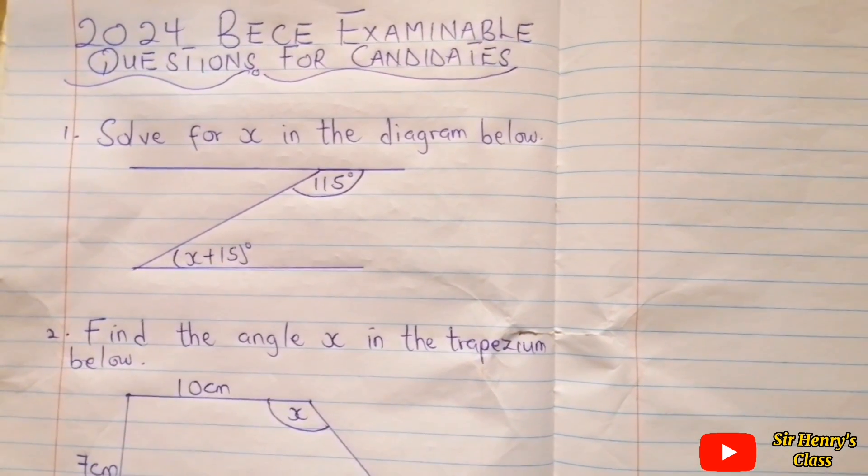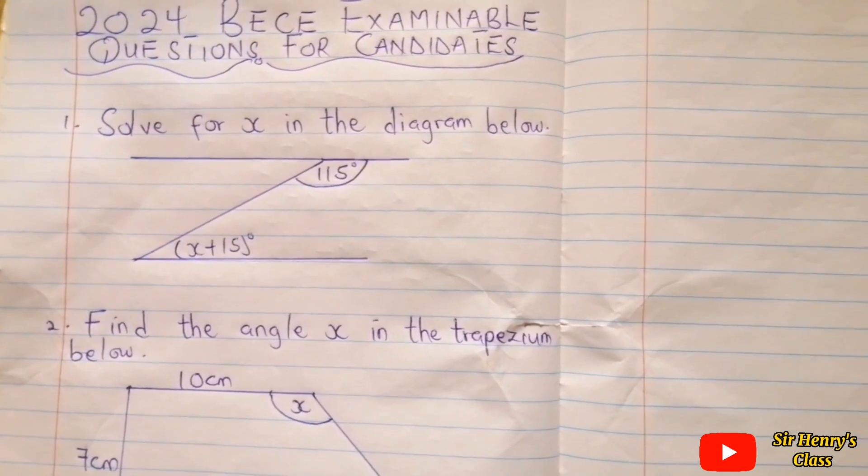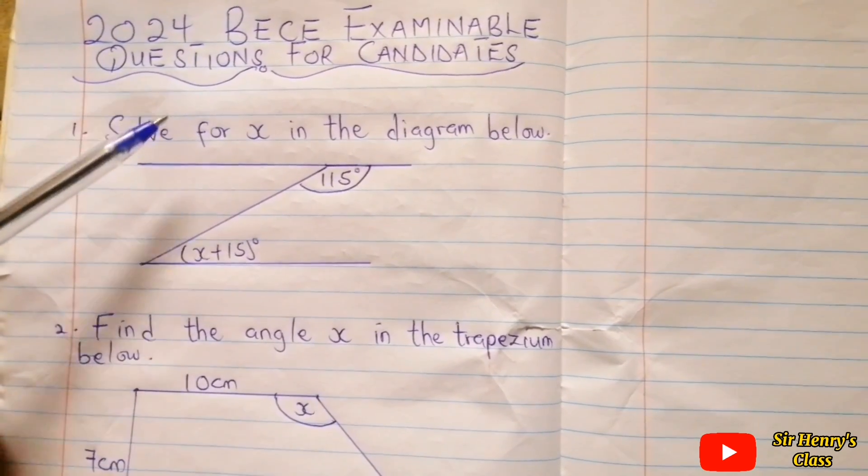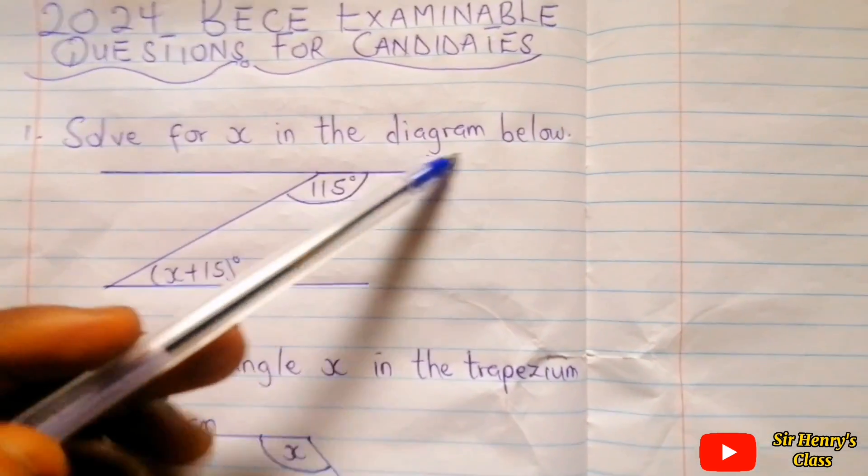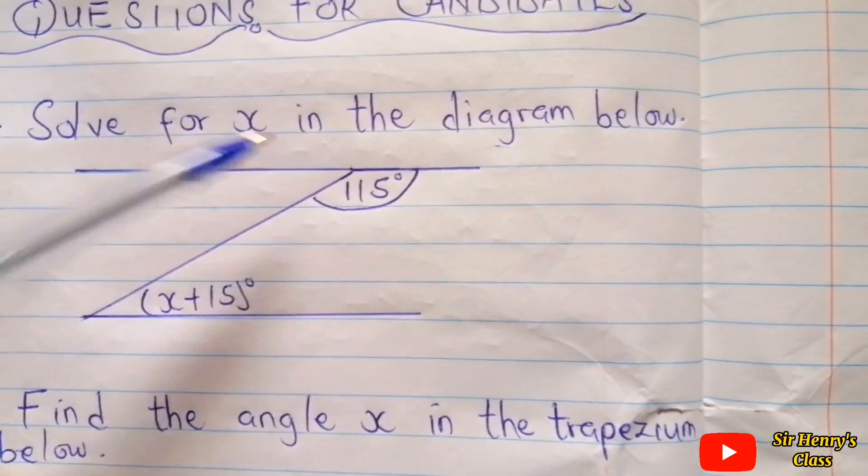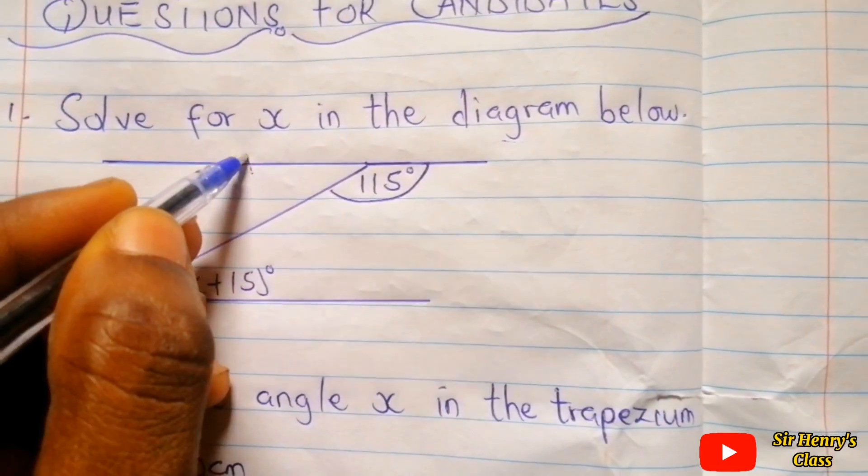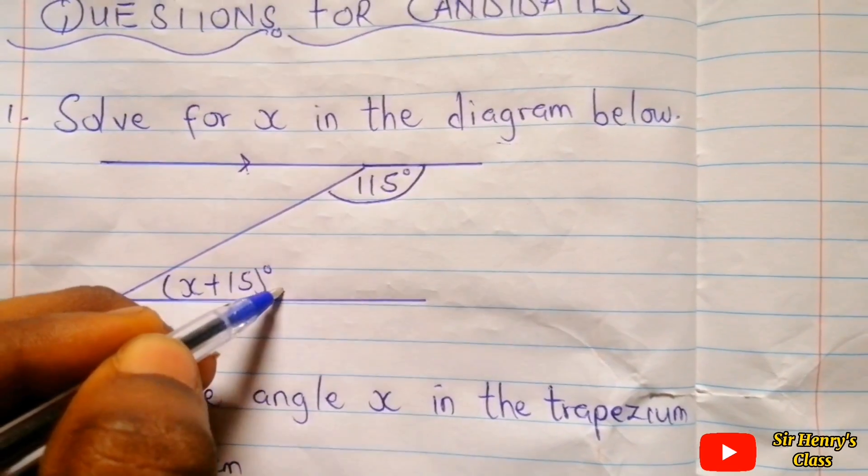If this is your first time watching our video, please subscribe, comment, like and share our videos. The first one says that we should solve for x in the diagram below. Looking at this diagram, these two lines are parallel lines, so they have arrows on them. Parallel lines are lines that do not meet or are opposite to each other.